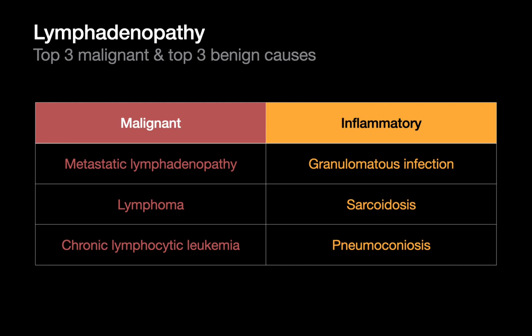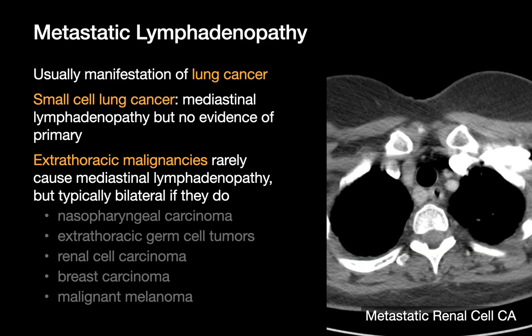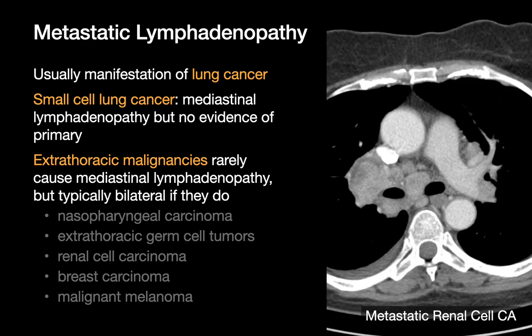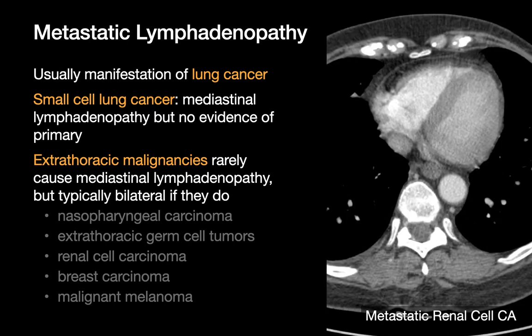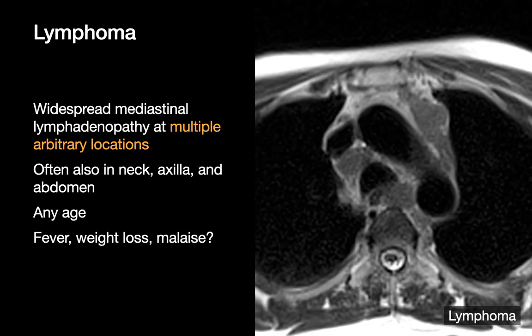Bronchopulmonary foregut malformations arise during embryogenesis when the embryonic foregut — which develops into the trachea and esophagus — undergoes abnormal budding. Those abnormal buds disconnect and give rise to bronchopulmonary foregut cysts. Bronchogenic cysts are lined by ciliated columnar epithelium with pieces of cartilage, bronchial glands, and smooth muscle bundles. Esophageal duplication cysts are lined by squamous epithelium, gastric mucosa, pancreatic tissue, and smooth muscle. Rarely, buds form neuroenteric cysts containing islands of neural tissue. Bronchogenic cysts are commonly found adjacent to the trachea and main stem bronchi, especially near the carina; esophageal duplication cysts are more often found near the GEJ; and neuroenteric cysts prefer a location closer to the vertebral bodies superior to the carina.